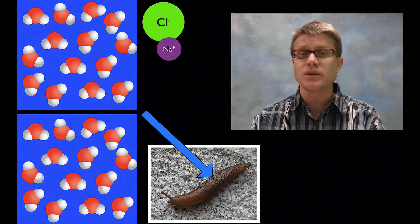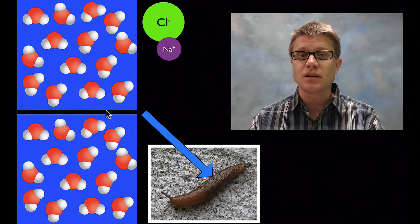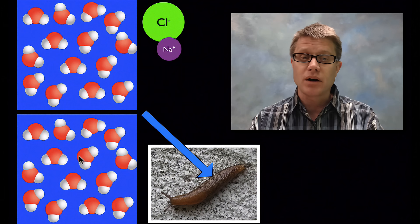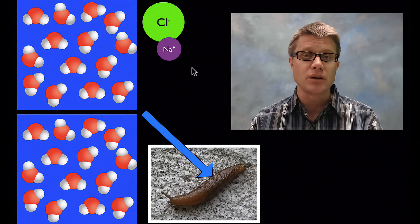Let's zoom in to the surface of the slug. So this represents a cell membrane on the outside of the cells of the slug. We've got water on the outside, water on the inside. Let's say we add just one crystal of sodium chloride or salt.